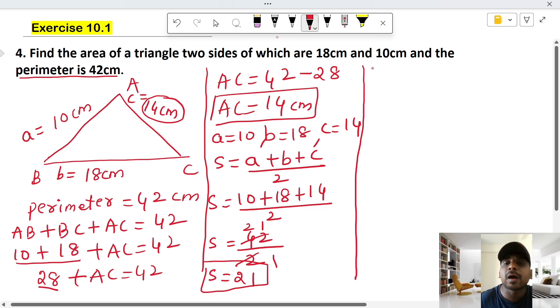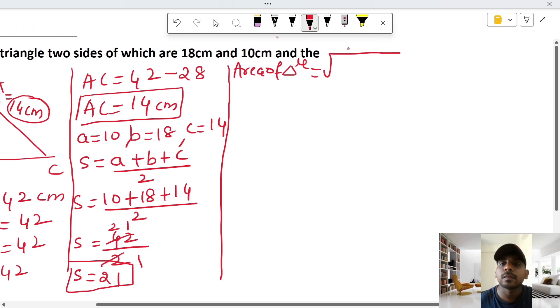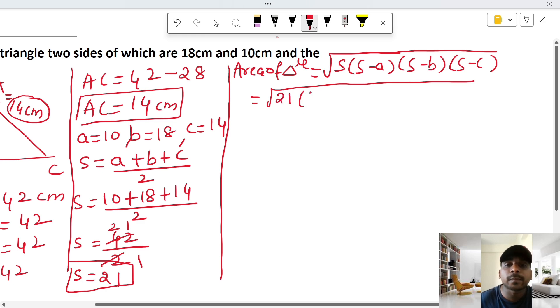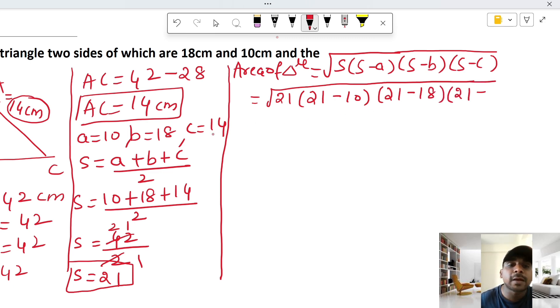Now we apply the area of triangle formula. Area equals the square root of S times S minus A times S minus B times S minus C. Substituting the values, S is 21, S minus A is 21 minus 10, times 21 minus 18, times 21 minus 14.